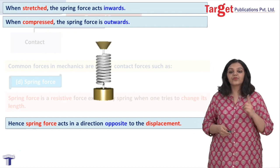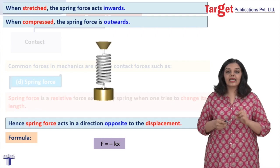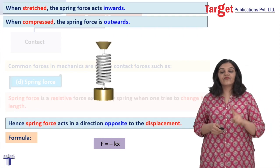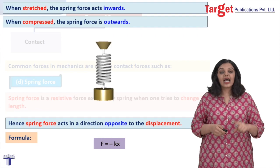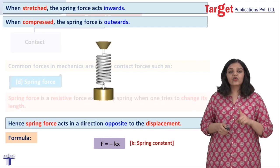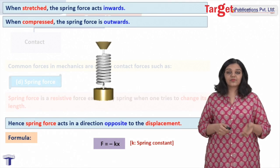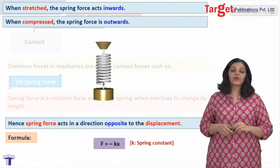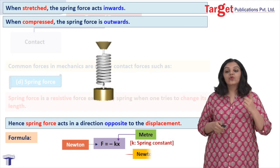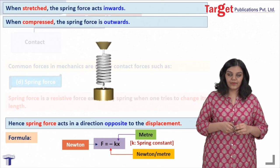The formula for spring force is F = −kx, where x is the displacement, F is the force, and k is the spring constant. The unit of x is meters and the force is in newtons, therefore the unit of the spring constant is newton per meter.